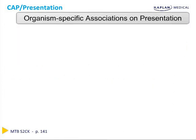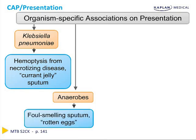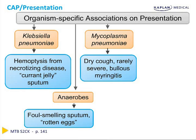While we've already discussed organism-specific associations with regard to epidemiologic and demographic information, there are also some clinical presentations that are associated with certain organisms — important for Step 2. For Klebsiella pneumoniae, we sometimes see hemoptysis. This is because Klebsiella can cause necrotizing disease, and usually this kind of hemoptysis is described as appearing as currant-jelly sputum. Anaerobic bacteria usually result in extremely foul-smelling sputum, sometimes given the scent of rotten eggs. Mycoplasma pneumoniae usually results in a dry cough and, very rarely, a severe bullous myringitis.